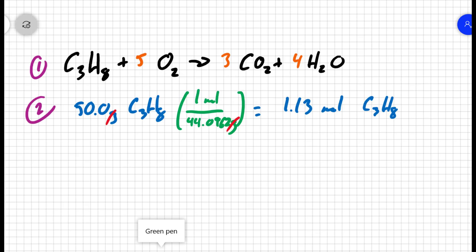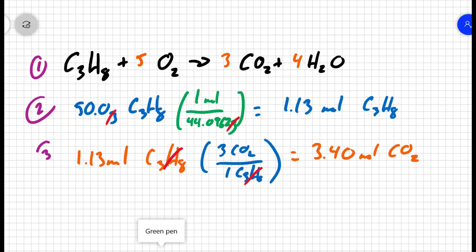Now that I'm in moles, I can use the ratios from my balanced equation to predict how much product I make. So I have 1.13 moles of C3H8. If I want to find how much carbon dioxide I make, there are three carbon dioxides for every one C3H8. Cancel out the C3H8, and I get 3.40 moles of CO2. That's step three.